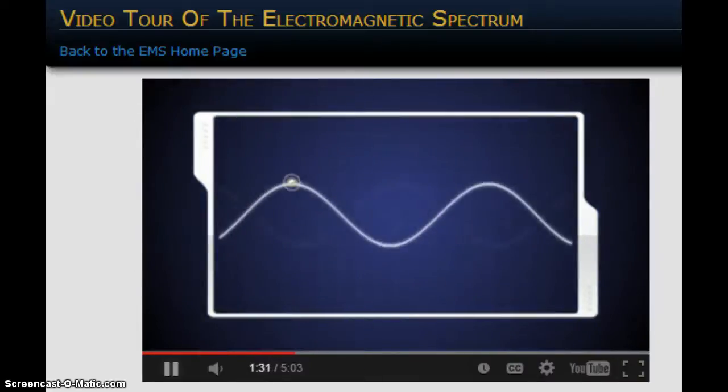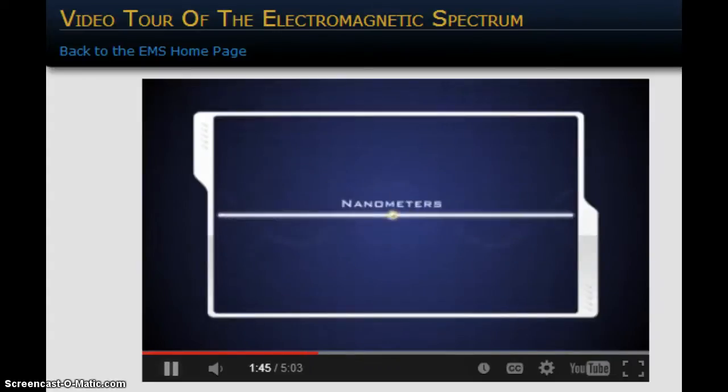EM waves have crests and troughs like ocean waves. The distance between crests is the wavelength. While some EM wavelengths are very long and are measured in meters, many are tiny and are measured in billionths of a meter, nanometers.